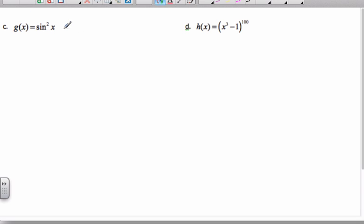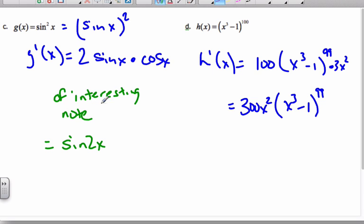So take a moment. Try these two on your own. Pause the video. And when you come back, the answers will magically appear. Try these. Okay, so here are the answers. I rewrote sine to be sine squared. And of interesting note, this is the identity sine 2x. You don't need to convert that, but sometimes it might be handy. And then here I've got the derivative of h.